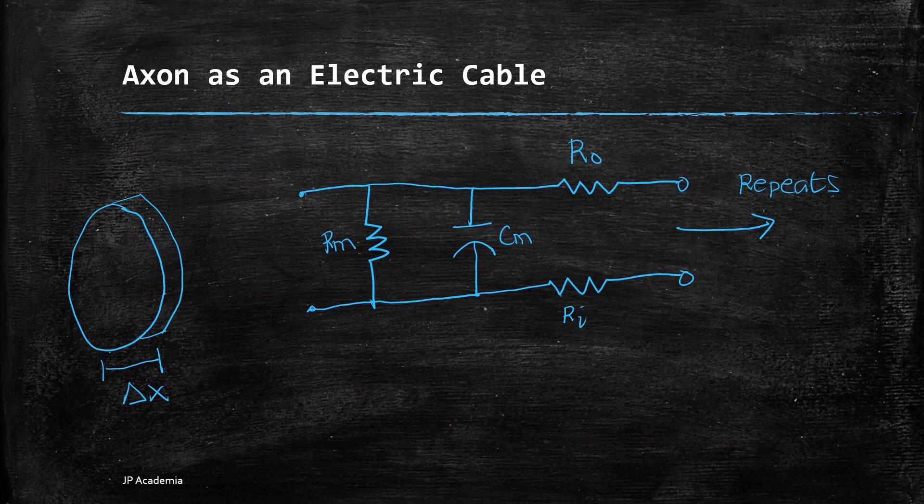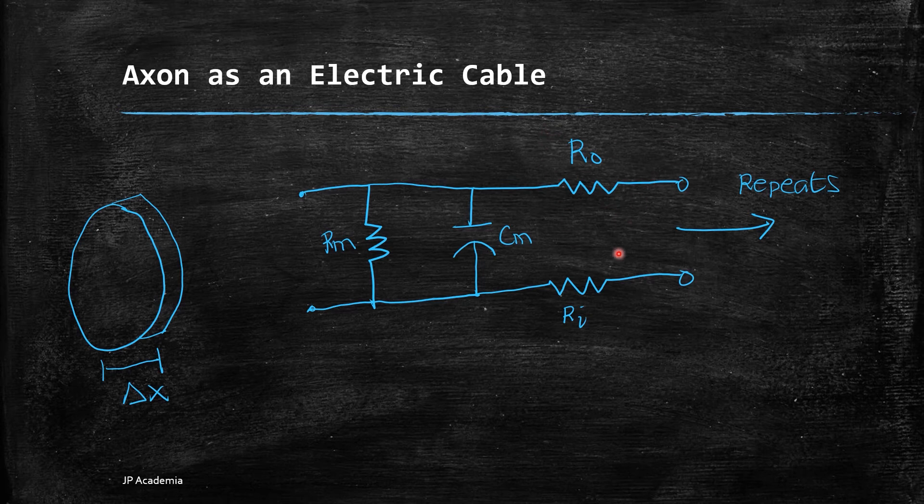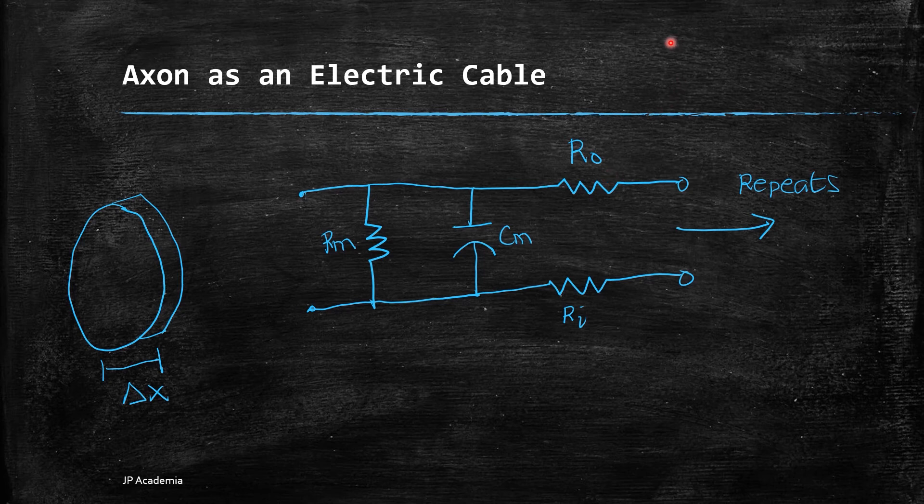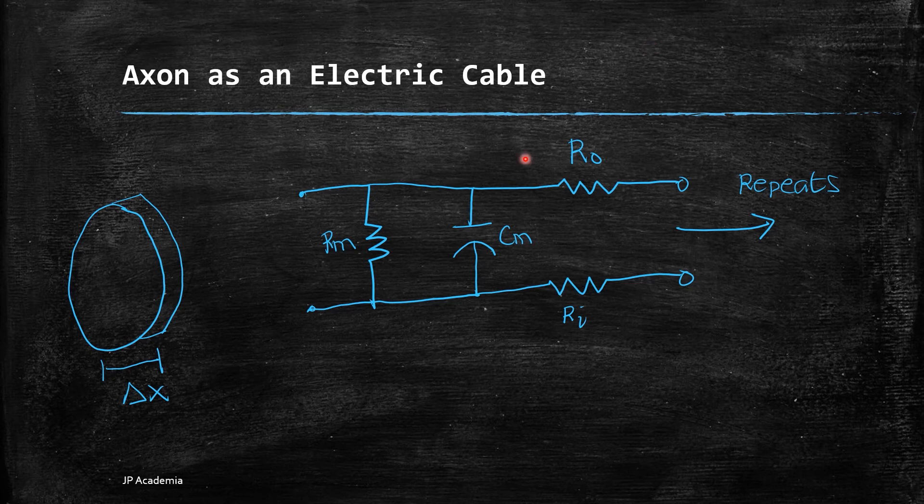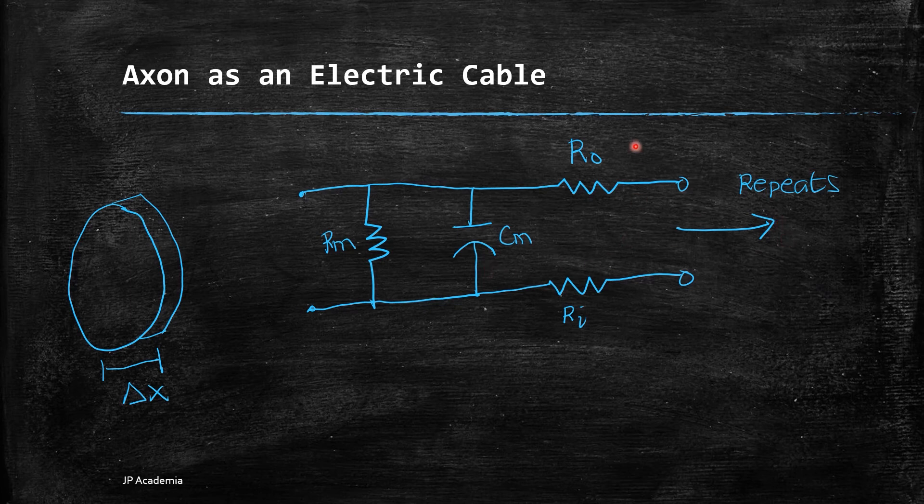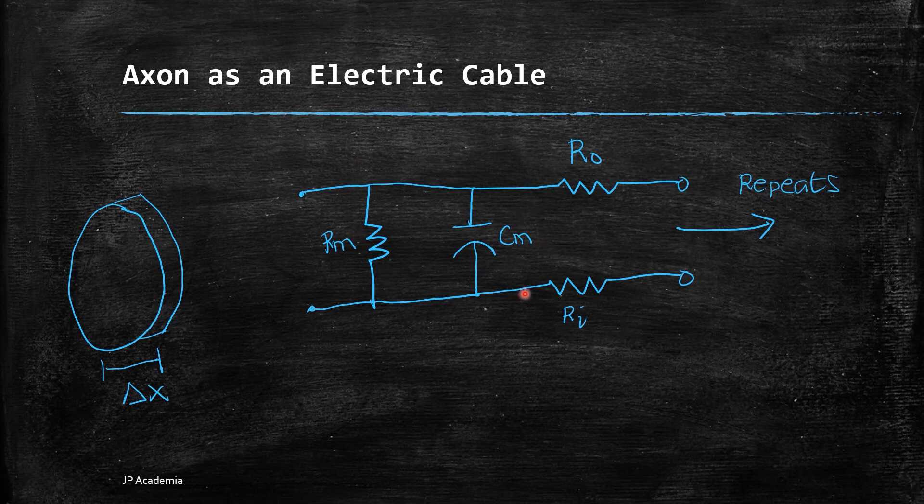In an axon, there is resistance due to the fluid inside and outside the membrane. The membrane can be modeled as a leaky insulator that can be expressed in terms of capacitance and resistance. When a potential difference is placed between inside and outside the axon, we can represent a small axon cross-section length of ΔX as this electrical circuit with repeating patterns of resistance R₀, R_I, and capacitance components.